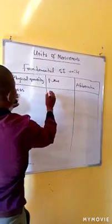Time — the name of the unit is second, abbreviation S. Amount of substance — the name of the unit is mole. Luminous intensity — the name of the unit is candela, abbreviation cd. So these are the fundamental SI units that we shall be using.